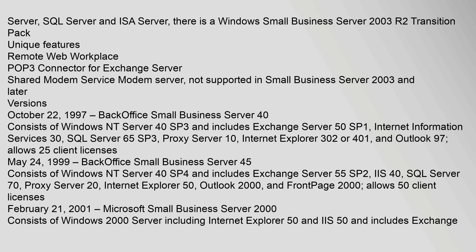October 22, 1997: BackOffice Small Business Server 4.0 consists of Windows NT Server 4.0 SP3 and includes Exchange Server 5.0 SP1, Internet Information Services 3.0, SQL Server 6.5 SP3, Proxy Server 1.0, Internet Explorer 3.02 or 4.01, and Outlook 97 — allows 25 client licenses. May 24, 1999: BackOffice Small Business Server 4.5 consists of Windows NT Server 4.0 SP4 and includes Exchange Server 5.5 SP2, IIS 4.0, SQL Server 7.0, Proxy Server 2.0, Internet Explorer 5.0, Outlook 2000, and FrontPage 2000 — allows 50 client licenses.